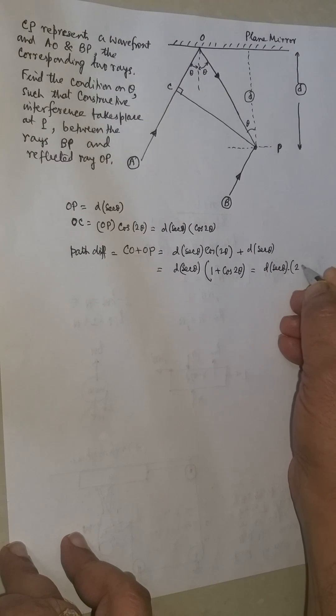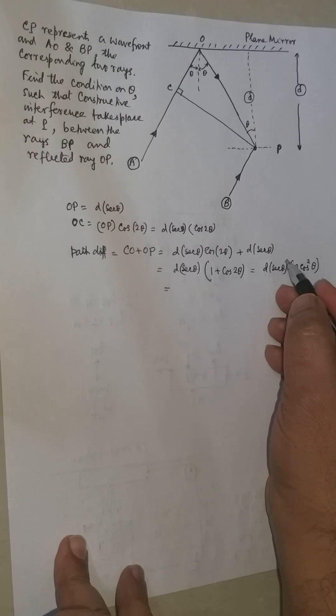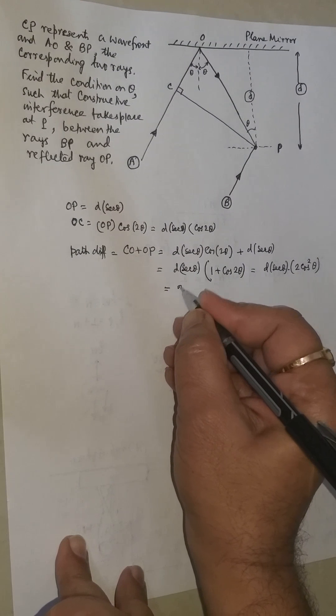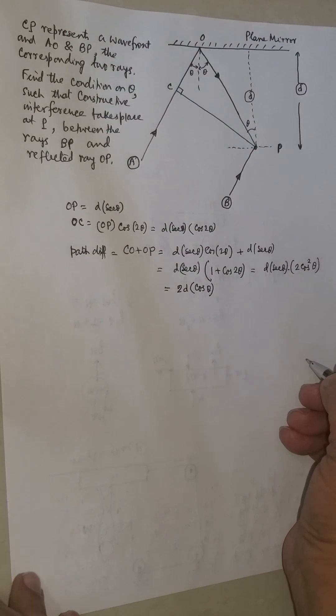For further simplicity, D sec theta and this is 2 cos square theta, using the identity. One of the sec theta and cos theta cancels. So it will be 2D cos theta. This is path difference.